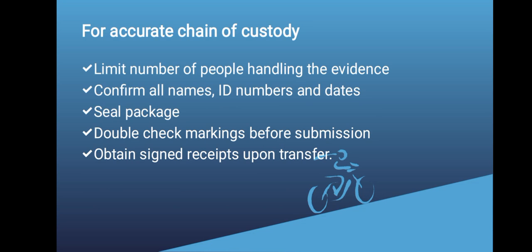For an accurate chain of custody, some things must be done. First, limit the number of people handling the evidence — the fewer the people, the better. Second, confirm all names, identity numbers, and dates are correct. You seal the package, and sealing plays an important role as it will also prevent cross-contamination. Double-check markings before submission to ensure everything is correct. Also obtain signed receipts upon transfer — that is, transfer from one person to the next, maybe from a forensic pathologist to a forensic toxicologist, until it's produced in court.